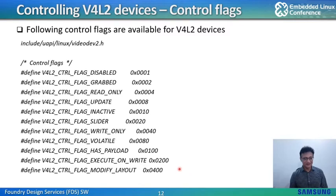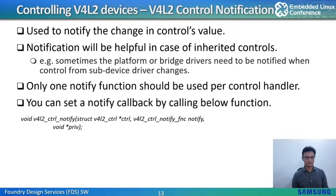The V4L2 framework provides a control notification method where any change in control value can be notified to other devices. This is particularly useful when controls are inherited — such as when a bridge device has the controls of a sensor sub-device, and any changes in control value by the sub-device can be notified to the bridge device. Only one notify function should be used per control handler. You can set the notify callback using the V4L2_ctrl_notify API.